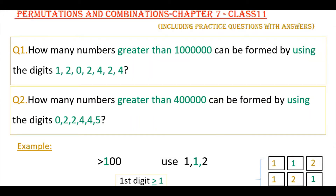Hello everyone. Today I am going to show how to find the solutions of these two problems. The first one is: how many numbers greater than 1 million can be formed by using the digits 1, 2, 0, 2, 4, 2, 4? The second one is similar, but here greater than four lakhs can be formed by using the digits 0, 2, 2, 4, 4, 5.